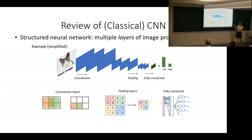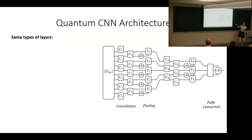In the quantum case, we have the same kinds of layers - convolution and fully connected layers.